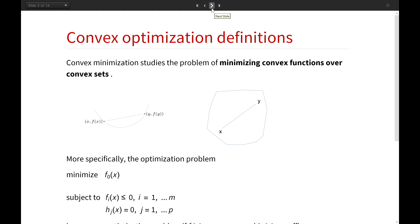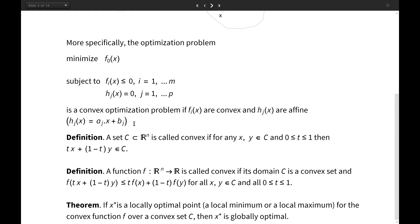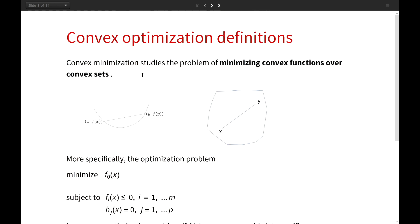So a few quick definitions. Convex optimization studies minimizing convex functions over convex sets. More formally, it minimizes convex functions f over convex function inequalities and affine function equalities. And for convex optimization we know that every local optimal point is a global optimal point.